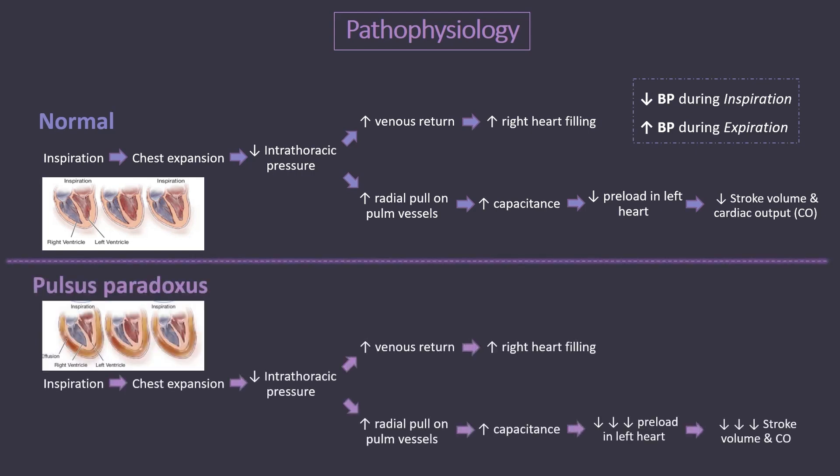In pulsus paradoxus, the drop in systolic pressure during inspiration is exaggerated. This is because external forces, like cardiac tamponade, do not let the right heart free wall expand during inspiration in order to accommodate increased venous return. This increased venous return in the right heart is then accommodated at the expense of the left heart chamber, because the interventricular septum pushes into the left chamber. As a result, preload on the left side is abnormally reduced, leading to markedly decreased stroke volume and cardiac output during inspiration, and a drop in systolic blood pressure of more than 10 mmHg.